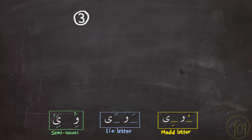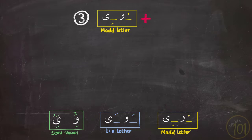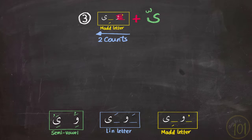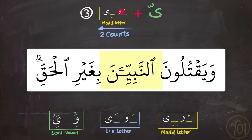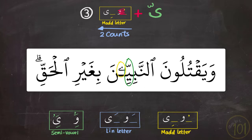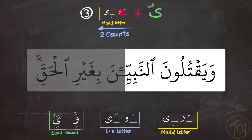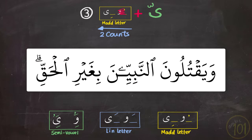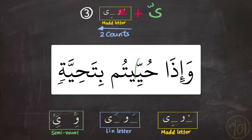The third and final case: if يا as a مد letter was preceded by يا with شدة. This situation only concerns the يا since there is no such case for وو. So the word النبيين — أَنَّبِيِّينَ, not أَنَّبِيِّينَ. You have to show that there are two يا's one after the other, even though it is just a symbol of the يا, it is still a fully pronounced يا. Another example: وإذا حييتم بتحية — so we extend the second يا since it is a يا as a مد letter, and we say حُيِّيتُمْ.